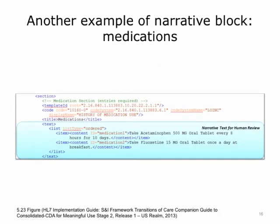Let's look at a narrative block on medications. One of the first things listed is the section code, which is a LOINC code. The LOINC code 10160-0 means history of medication use. The XML tags in this narrative block give instructions to the processor to display the title as 'Medications,' and then a string of text for each medication as an ordered list of items. The tags title, text, list, item, and content all have to do with how the content looks on the screen. Information is written as a sentence — for example: 'Take acetaminophen 500 milligram oral tablet every eight hours for ten days.' This makes it readable on a screen instead of having multiple separate fields for structured data.